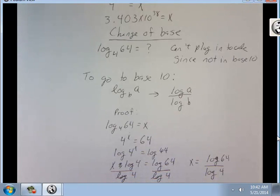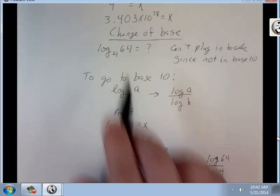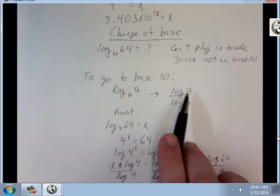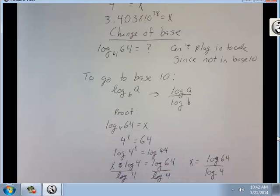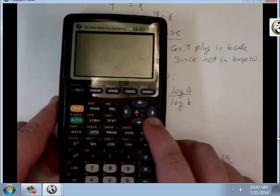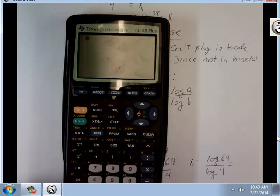So, in order to solve one like this, just set up like this. And by the way, the answer to this one is log 64 divided by log 4, which equals 3.